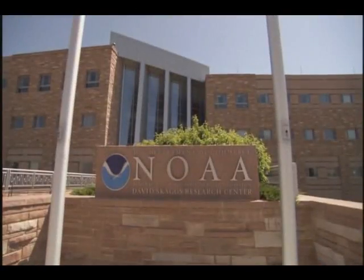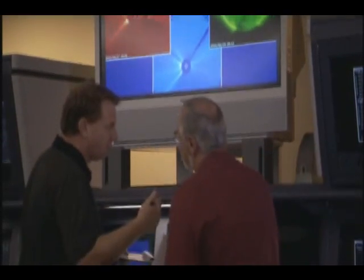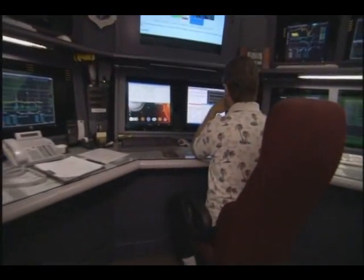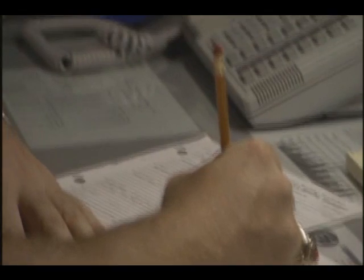Boulder, Colorado. At the Space Environment Center, meteorologists monitor the storms on the Sun. It's the most extreme weather you're likely to see. A light breeze out there is 200 miles per second.